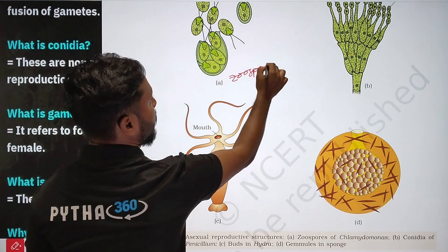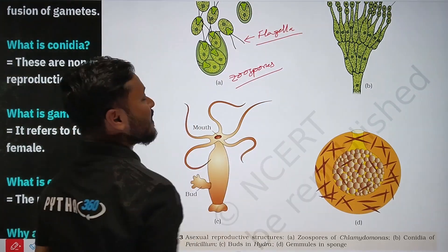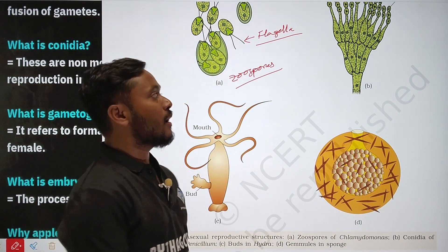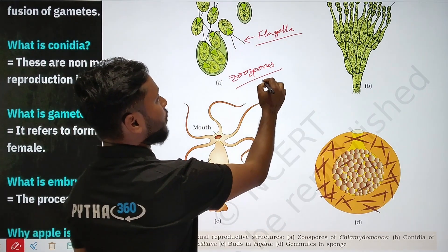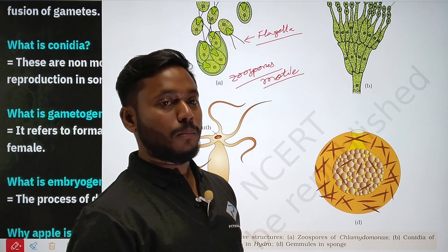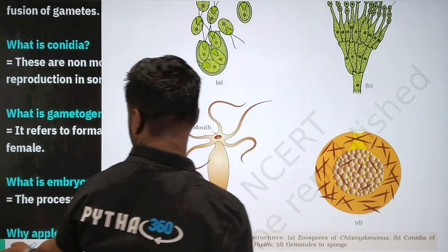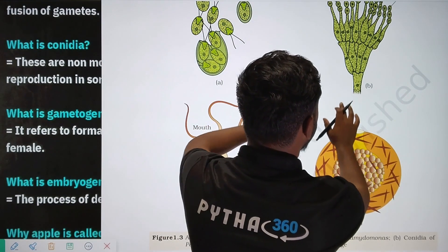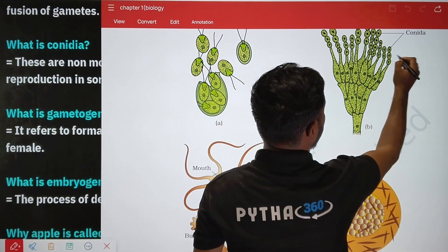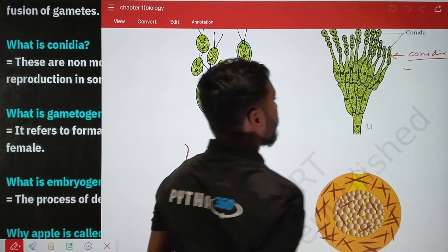What are zoospores? They have flagella — flagella help in movement. These are motile spores; the motile term is used for movement. Zoospores have flagella and are motile, whereas conidia are non-motile.